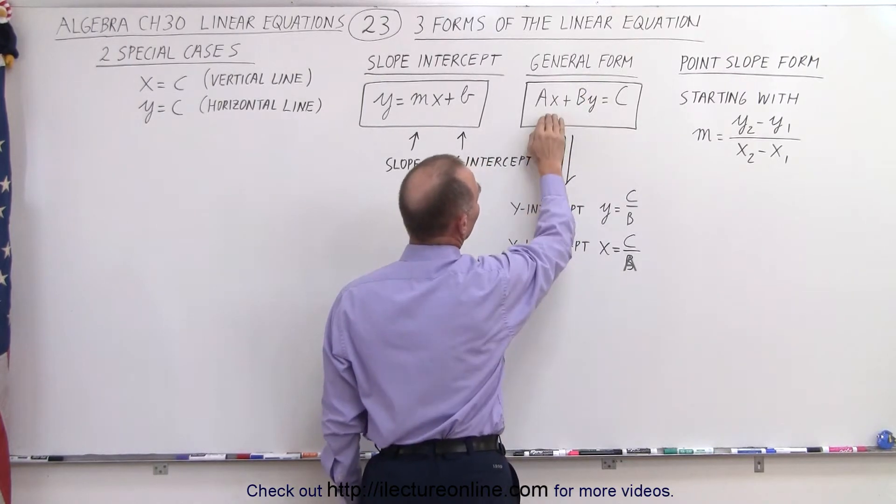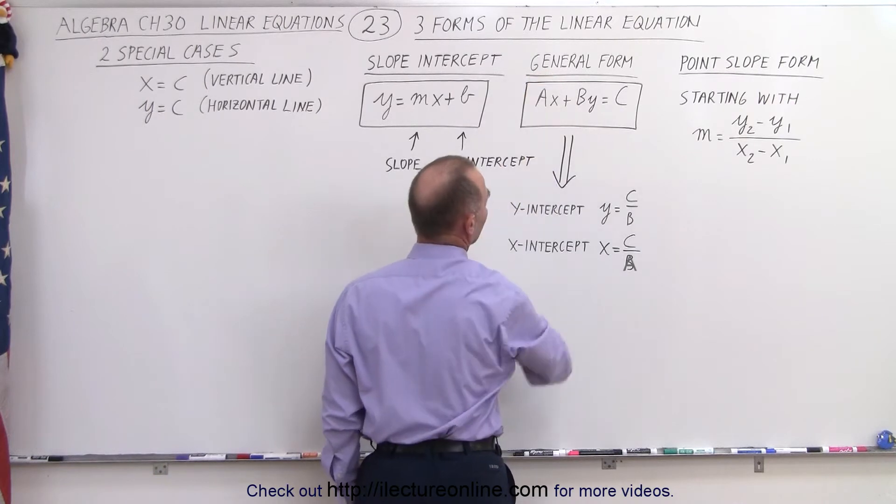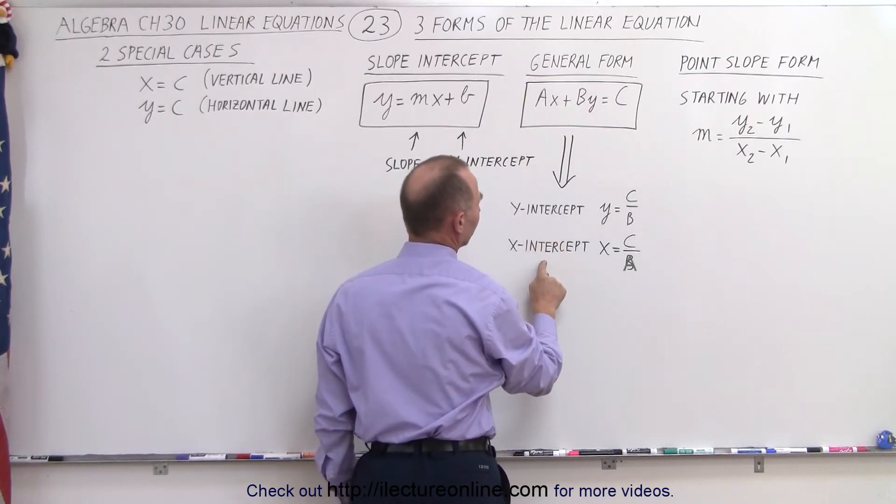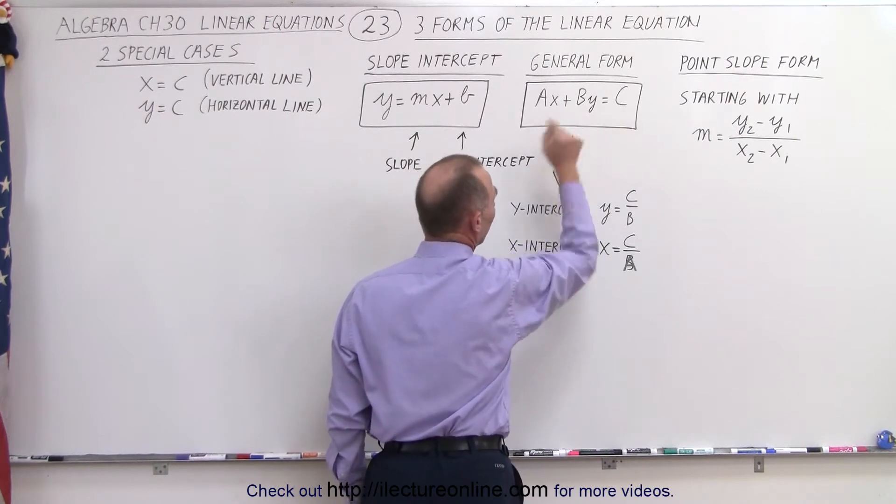And if we set x equal to zero, that's where we cross the y-axis, we have y equals C over B. So the y-intercept and the x-intercept can be found by setting ultimately x and y equal to zero.